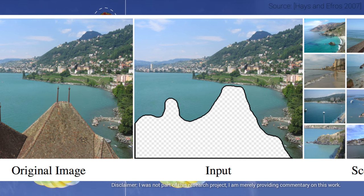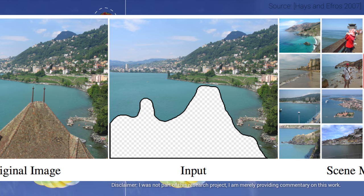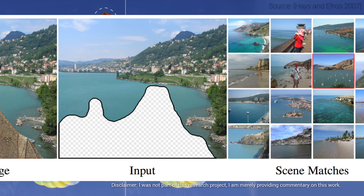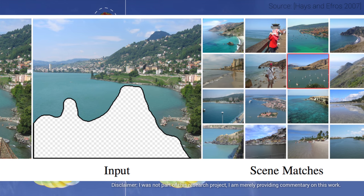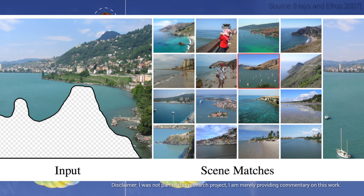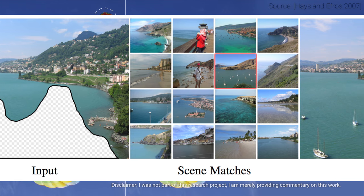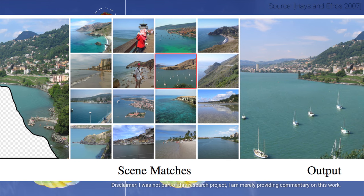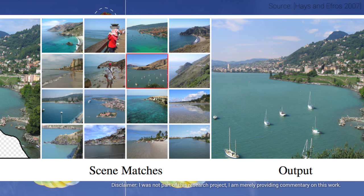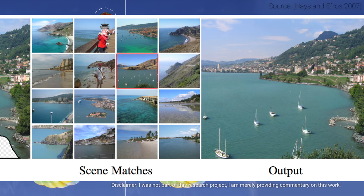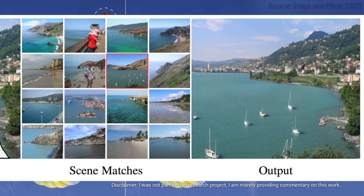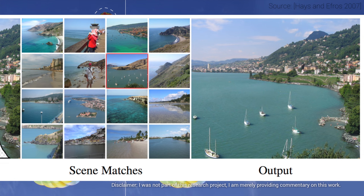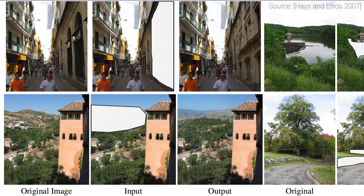Let's grab an image and cut a sizable part out of it and try to algorithmically fill it with data that makes sense. Removing a drunk photobombing friend from your wedding picture, or a building blocking a beautiful view to the sea are excellent, and honestly, painfully real examples of this. This problem we like to call image completion or image inpainting.